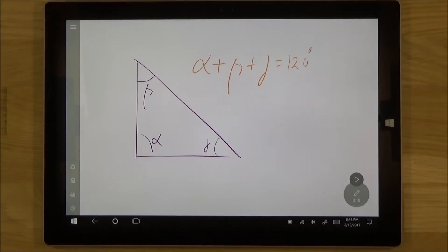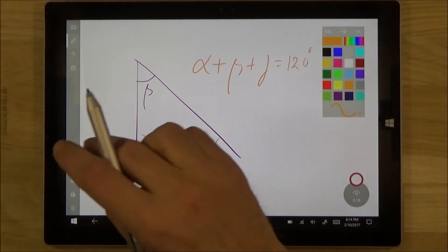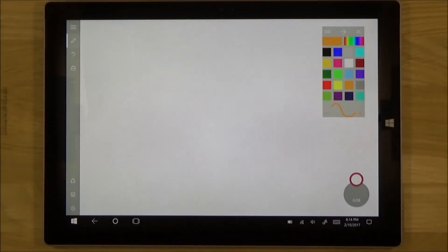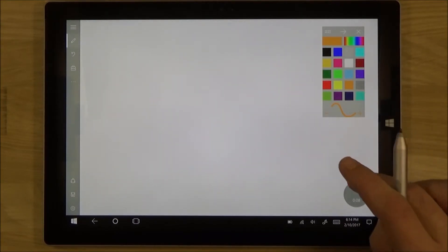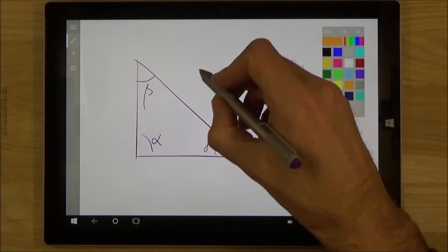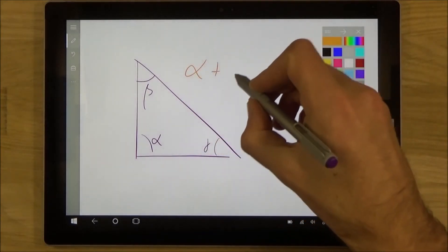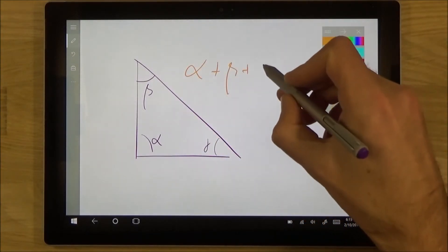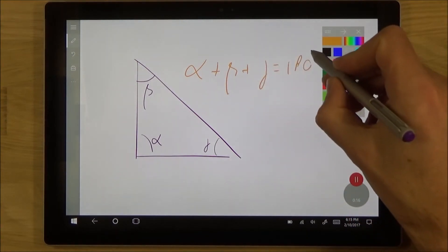If you made a mistake you can redo the voice-over. Here we have a triangle with the angle alpha, beta, and gamma. The sum of alpha, beta, gamma is 180 degrees.